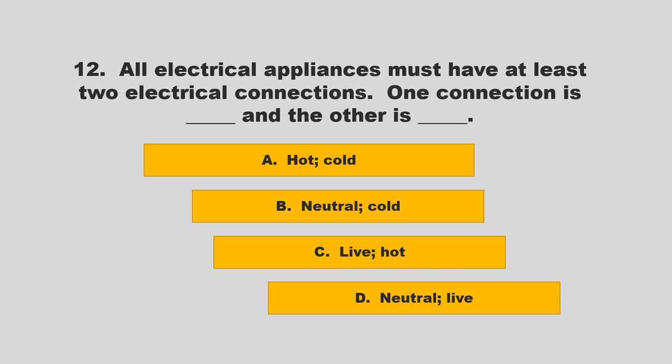All electrical appliances must have at least two electrical connections. One connection is blank and the other is blank. Is it hot/cold, neutral/cold, live/hot, or neutral/live? If you chose D, neutral and live, you are correct.